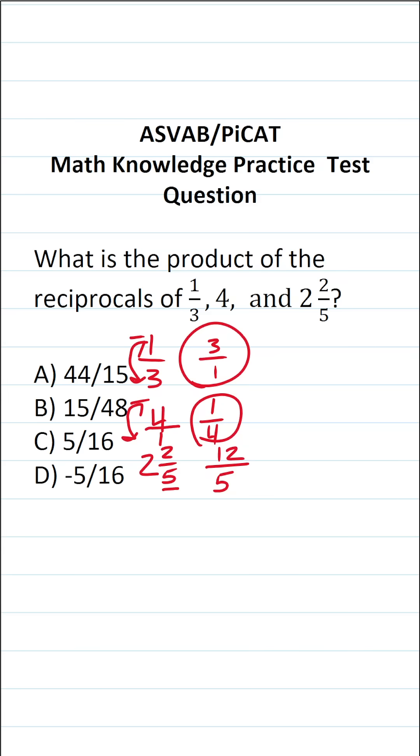We're not done yet because now we have to find the reciprocal of 12 over five. All we have to do is flip it. So the reciprocal of 12 over five is going to be five over 12.